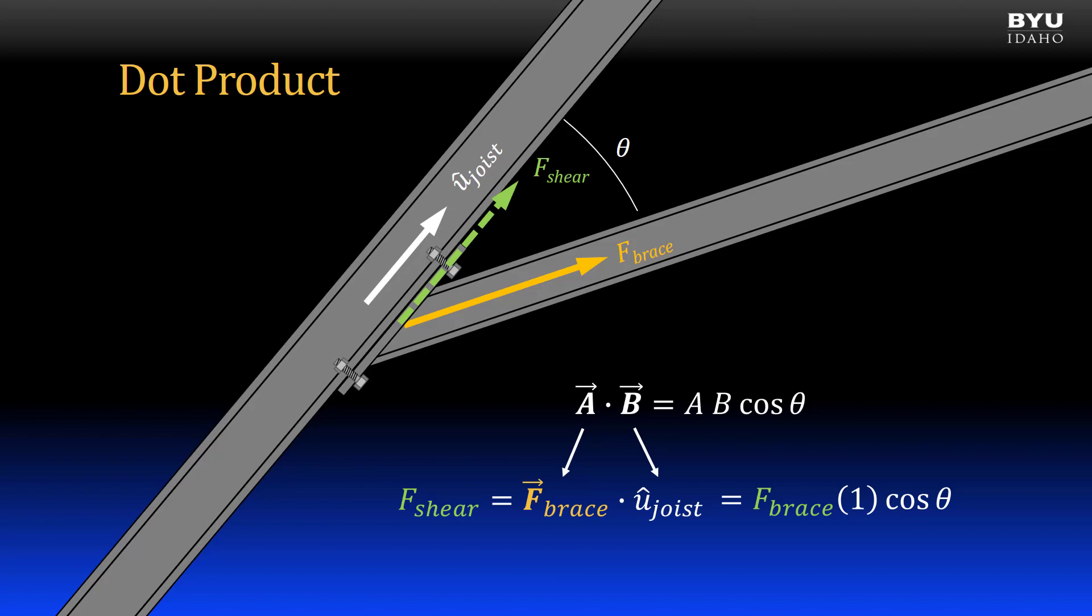The dot product may not seem like a big deal in this example, but it becomes very useful when you have three-dimensional vectors as you will see.